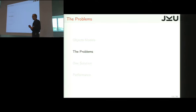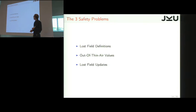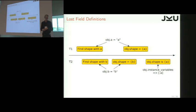We can get this kind of problem. We saw we can already lose a field entirely. We can also get out-of-thin-air value. That's when you get the value of another field. And then we can also lose field updates.